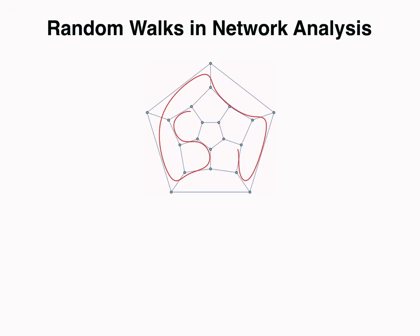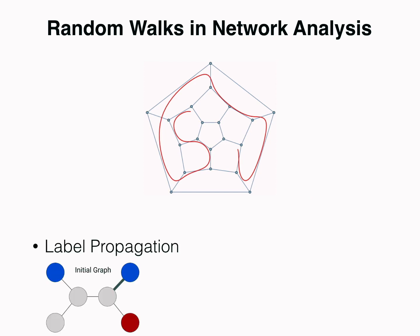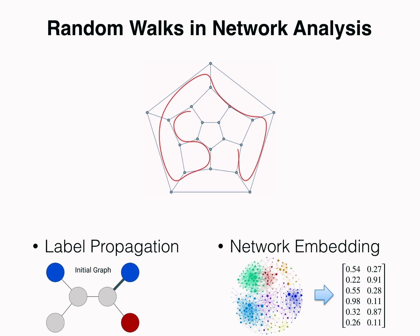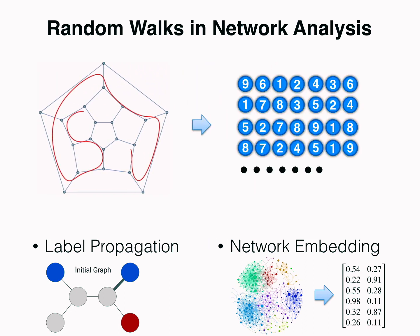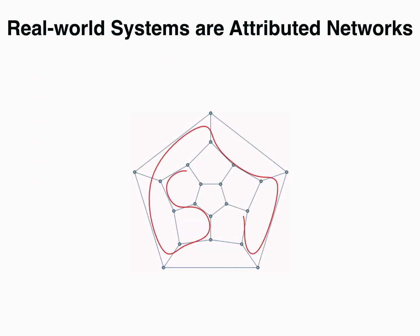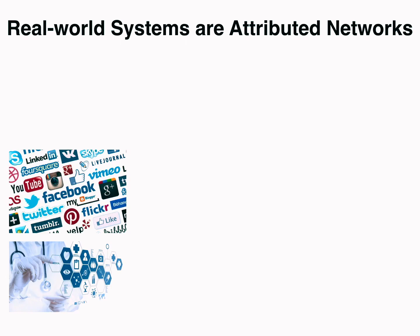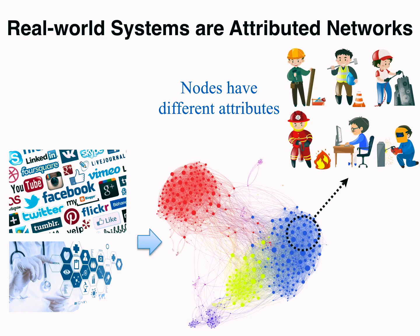Random walks have been widely adopted in various network analysis tasks, ranging from label propagation to network embedding. It could capture and convert geometric structures into structure sequences, while alleviating the issues of sparsity and curse of dimensionality. Though random walks on plain networks have been intensively studied, in real-world systems, nodes are often not pure vertices.